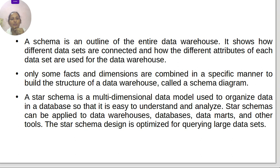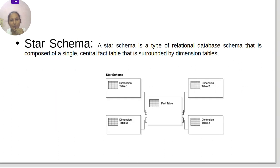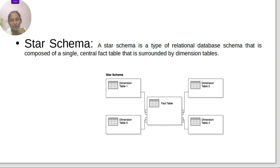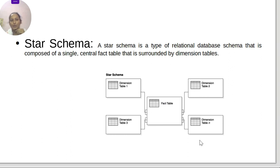So what is the structure of the star schema? A star schema is a type of relational database schema that is composed of a single central fact table surrounded by dimension tables. This is the basic structure of the star schema — this is the fact table, and these are the dimension tables.